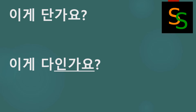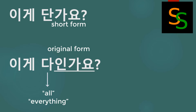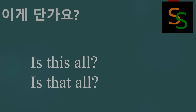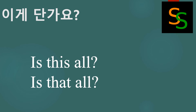단가요 is a very popular expression, but you need to understand that this is a short form. The original form is 다 인가요. 다 means 'all' or 'everything.' 인가요 is a question word indicating 'is it?' So 다 인가요 means 'is it everything?' 다 인가요 becomes the short form 단가요. In Korean, they use a lot of short forms in casual verbal conversations.